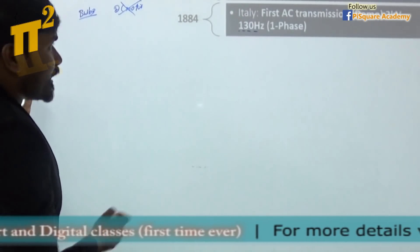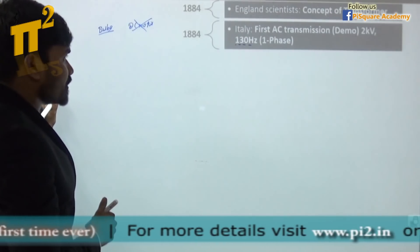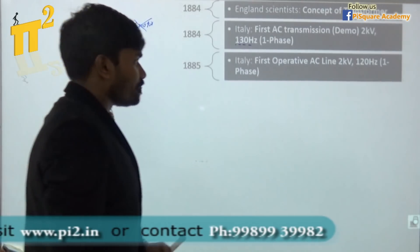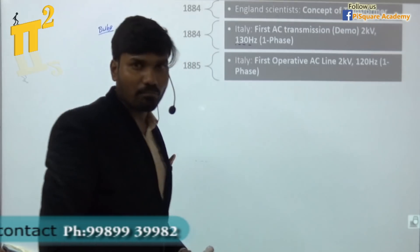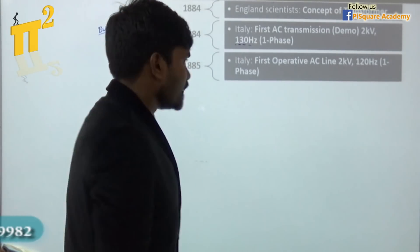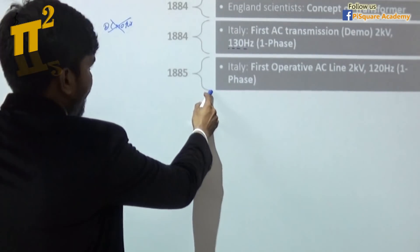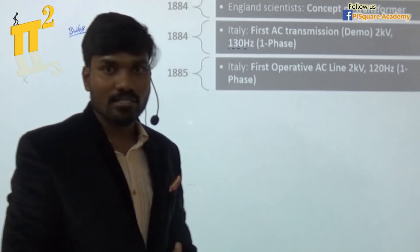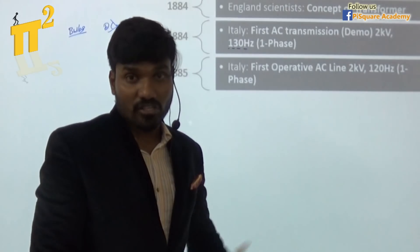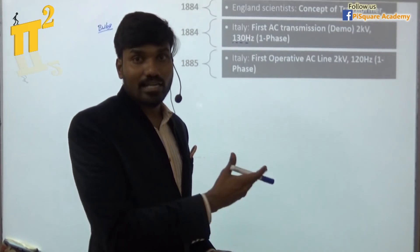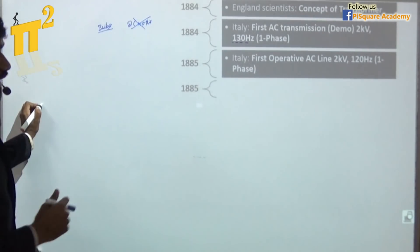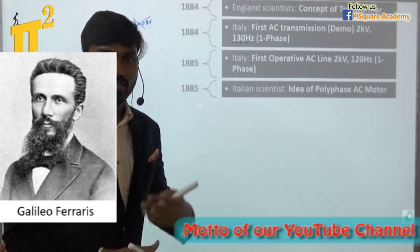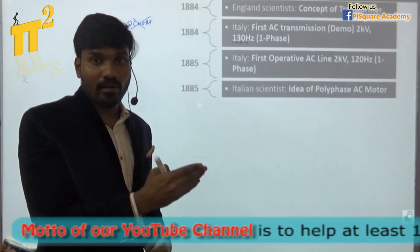After the successful 1884 demonstration of AC transmission, they built a commercial operative AC power plant in 1885 in Italy, this time at 2 kV but with 120 Hz, because they kept experimenting with different frequencies — there was no standard frequency at the time. Till 1885, AC power was only used to light up bulbs, not for DC motors. But obviously motors were very important for industries, and there was no motor that could run on AC power at that time. In 1885, an Italian scientist got the idea of an AC motor using polyphase — two-phase, three-phase — though he had not yet implemented it.